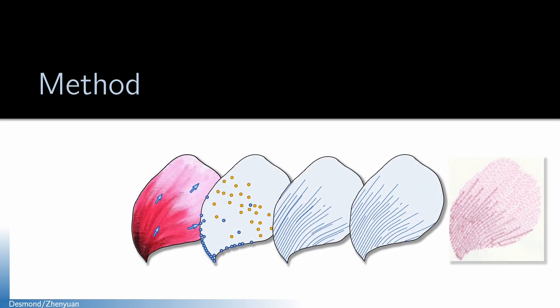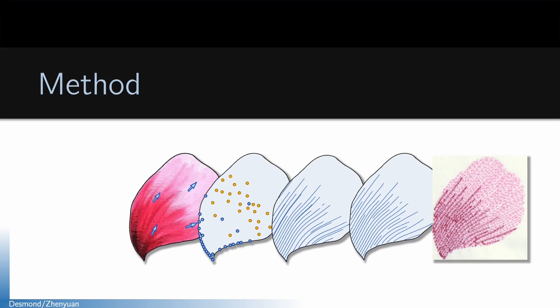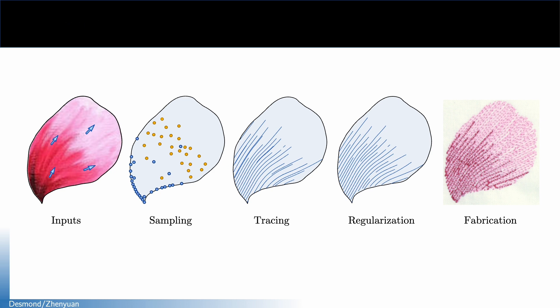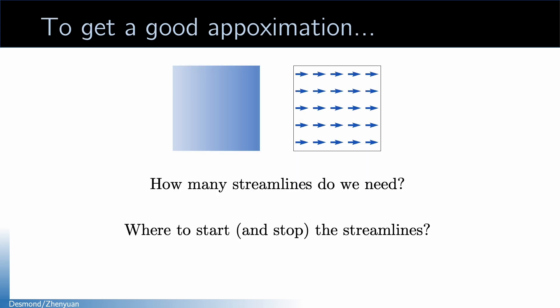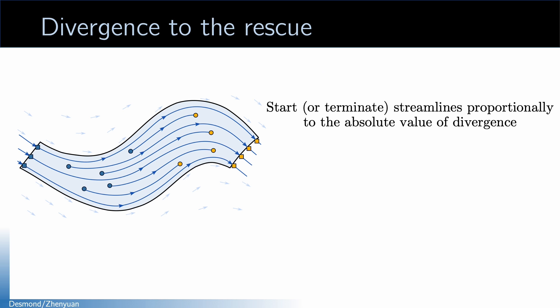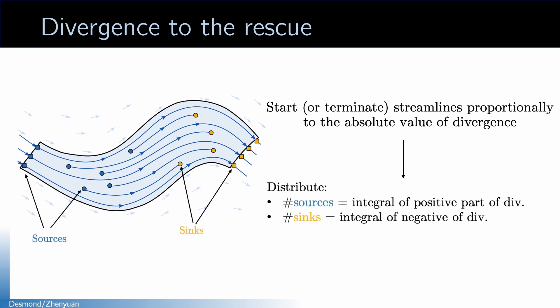In this part I'll introduce the pipeline for generating the stitching pattern briefly — you're always welcome to check out our paper for more details. The first part of our pipeline is about how to distribute sources and sinks, which is the key to getting a good approximation of the density field. There are two important questions: how many streamlines do we need, and where to start and stop them? The key is divergence. We need to trace and terminate streamlines proportionally to the absolute value of divergence. High absolute divergence means the density is changing fast, so we need to spawn or terminate a streamline locally to match the density change. More specifically, we distribute sources and sinks according to the integral of the positive or negative part of the divergence using a point sampling algorithm.